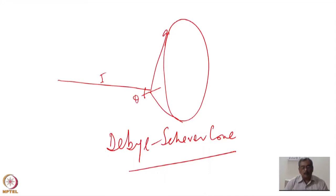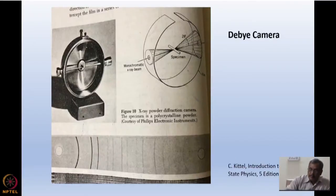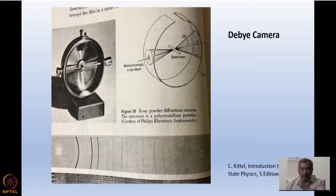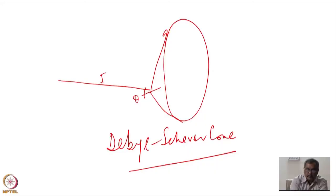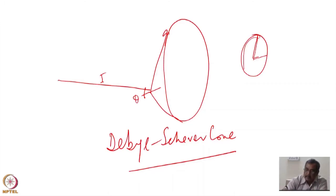This is the Debye-Scherrer cone. What I showed you in the photograph is basically a strip of photographic plate intercepting this Debye-Scherrer cone. The incident beam hole is here and the outgoing beam hole is there. You can see that the larger radius corresponds to smaller d-spacing, and I can calculate the d-spacing from the radius of this cone because this gives me the angle. From the radius of the Debye camera and knowing λ, I can find out the d-spacing.